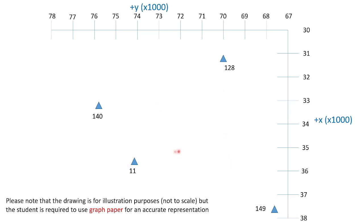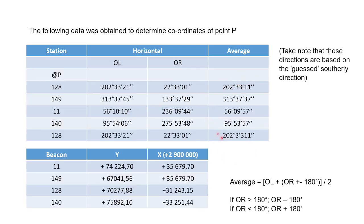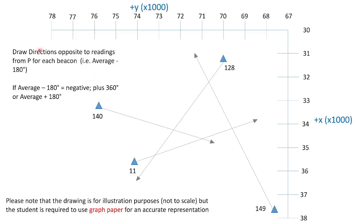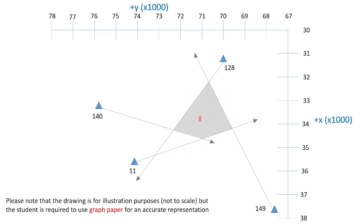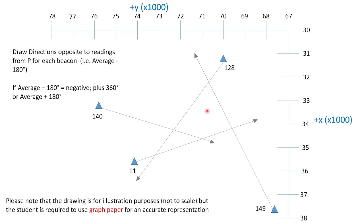I plotted out the coordinates given to us for each of the stations. The next thing I did is I took the opposite — the opposite is your average. These are the readings of your circle lefts from P, and I determined what is the opposite direction and drew it from there. So at beacon 140, your P to 140 is a certain value; minus 180 gives you the direction towards P from your 140. You basically draw these out so you can get an area of where your P would be. I drew a quite large area to show you that you get the middle of that area to get your P, but usually it will be a much smaller, more accurate area.